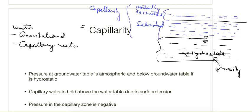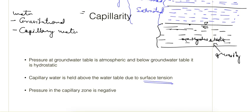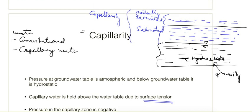The zone above the water table occurs due to capillarity in soil. The force responsible for holding water above the water table is surface tension. Surface tension acts when soil particles or any material exist at the interface of two physical states — here, soil is in contact with water, and above the water table it comes into contact with air. At this interface, surface tension causes water to rise, and that rise is called the capillary rise.